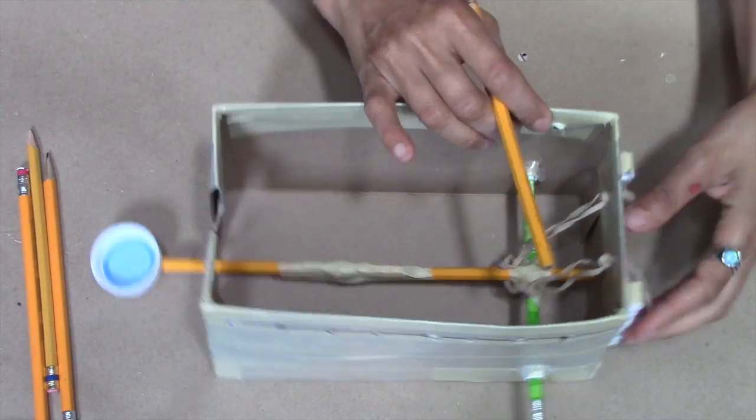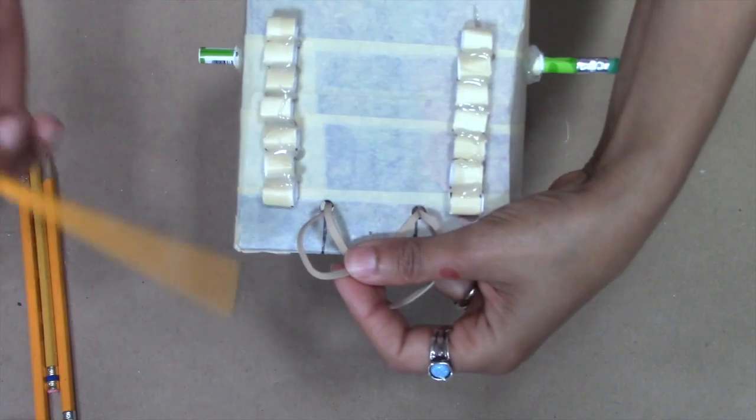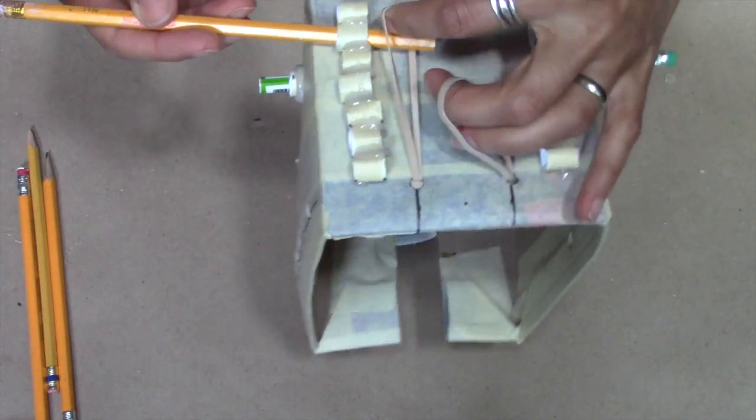Slide it through one of the tubes, then through the rubber band loops, then the tube directly in line with the first.